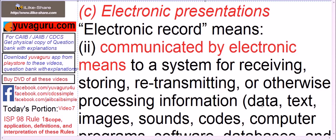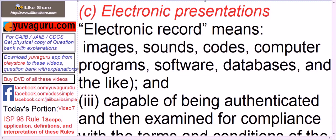The types of information covered include: data, text, images, sounds, codes, computer programs, software, databases, and the like.